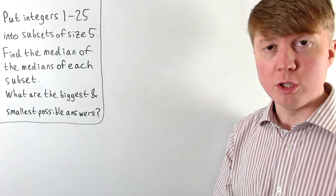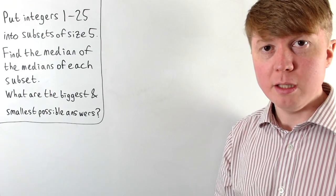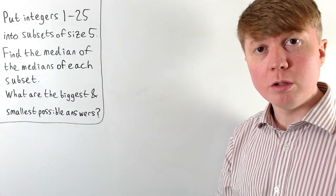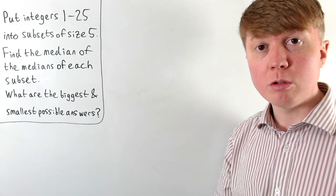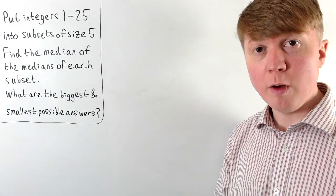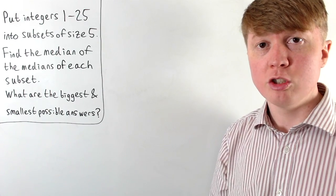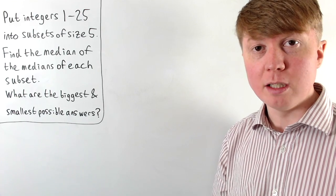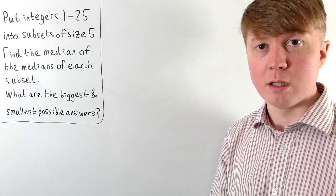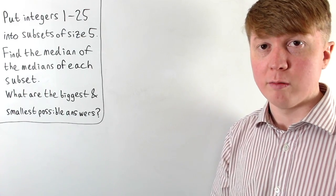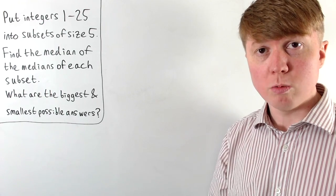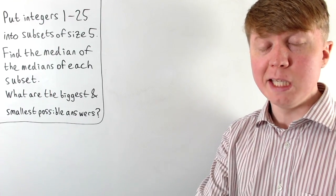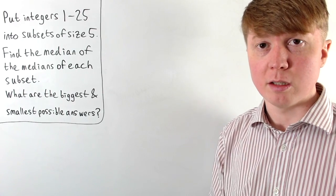We're going to solve a problem to do with finding the median of a set of medians. We have the integers from 1 to 25, and we're going to arrange these into five subsets of five each, find the median from each of these subsets, then find the median of all of those medians to give our final value. The question is: what are the biggest and smallest possible values we can get for this final median of all five medians?